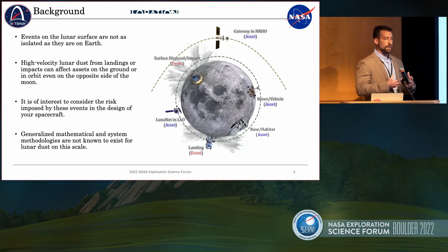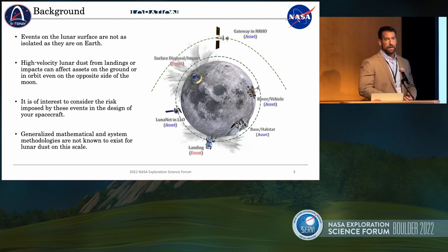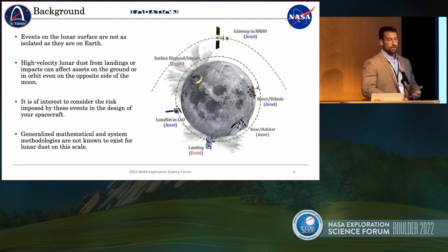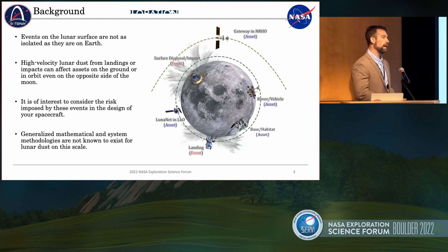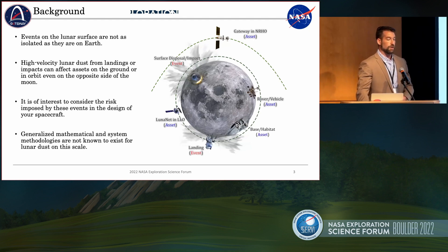We have divided the assets of interest into assets and events on a lunar surface. Assets would be something like the lunar gateway, maybe the Apollo 11 heritage site, a rover or a base on the surface, or something in low lunar orbit such as Lunanet. An event was categorized into either impacts or landings, both of which are known to generate high-velocity ejecta — in LCROSS's case, up to 5 kilometers per second. Part of this was generalizing these methods mathematically to determine the impact of different assets on the lunar surface.